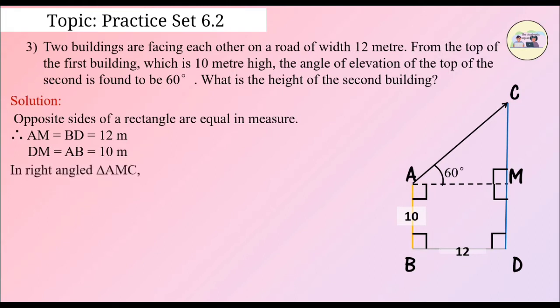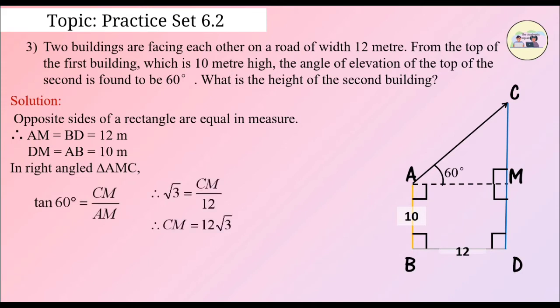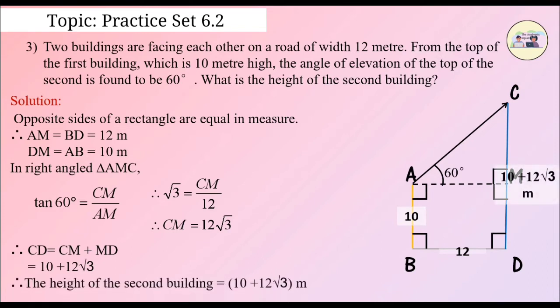In right angle triangle AMC, tan 60 degrees is equal to CM upon AM. Therefore, root 3 is equal to CM upon 12. Therefore, CM is equal to 12 root 3. Therefore, CD is equal to CM plus MD, which is equal to 10 plus 12 root 3. Therefore, the height of the second building is 10 plus 12 root 3 meters.